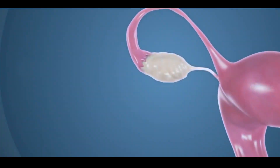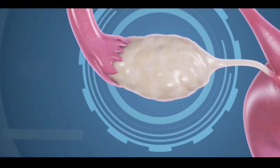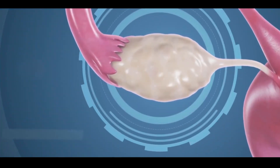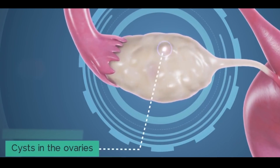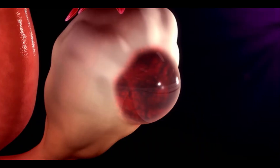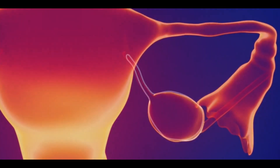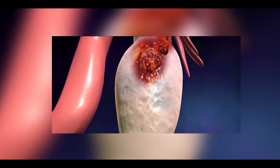Ovarian cysts are solid or liquid-filled sacs that develop in or on female ovaries. Usually, ovarian cysts are not harmful, and they form and degrade on their own. However, sometimes these cysts overgrow, so they may rupture and cause cancer.